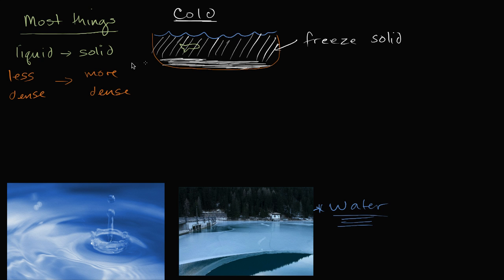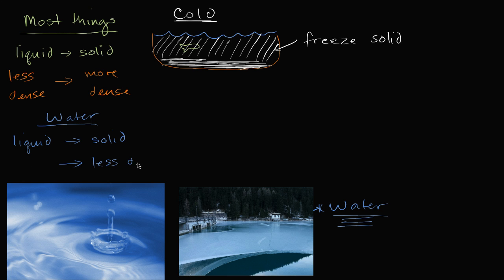But what's neat about water is that it does not follow this pattern. When we go from liquid water to solid ice, we actually get less dense. So ice is less dense than liquid water — this is why ice floats. Liquid water is more dense, and ice is less dense. And to think about why that is, it all goes back to hydrogen bonding.